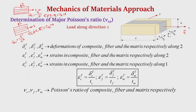Due to load along direction 1, the deformations in direction 2 due to Poisson's effect are delta_CT, delta_FT, and delta_MT — the deformations of the composite, fiber, and matrix along direction 2 respectively. The corresponding strains along direction 2 are epsilon_CT for the composite, epsilon_FT for the fiber, and epsilon_MT for the matrix. Because the load is applied along direction 1, there will also be longitudinal strains epsilon_CL, epsilon_FL, and epsilon_ML for the composite, fiber, and matrix respectively.